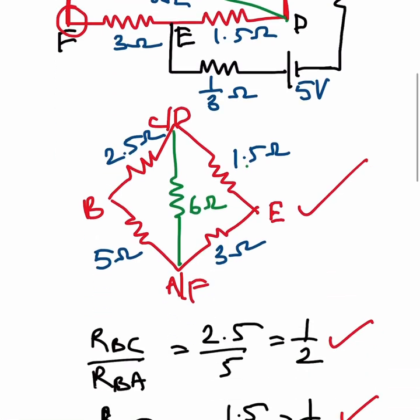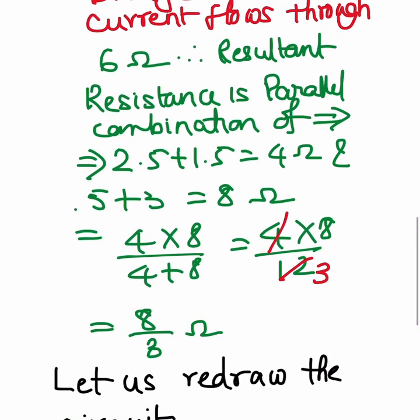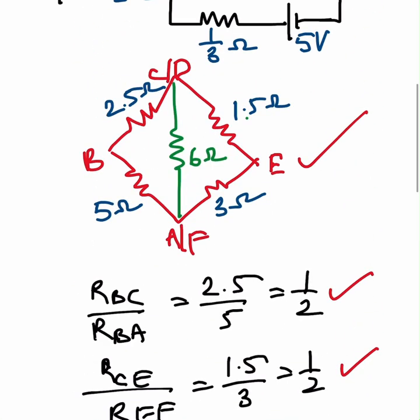So when you avoid that, I can redraw the circuit again. Resultant resistance is parallel combination of these two. Now what will happen? Now these two are in series.